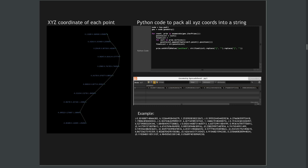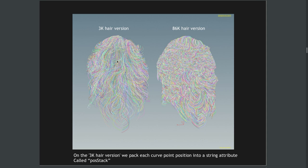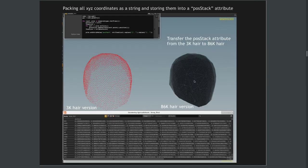If we think about it, a curve is made of multiple points, and each point has an XYZ coordinate. I'm going to pack all the XYZ coordinates of all the points into a long string using Python. At that time arrays weren't working well, so I take the XYZ coordinate of all points and create a string representing all of them. If we run this on the 3K curves, each curve gets that string attribute that represents all its points.